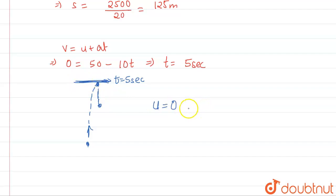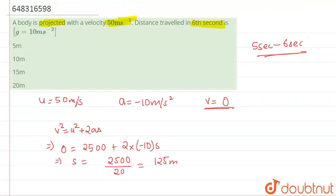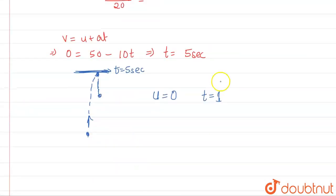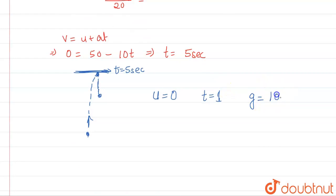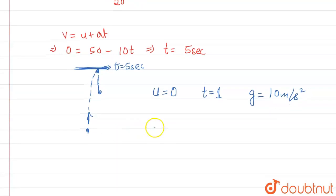V is unknown. Time is 1 second, because we are taking from 5 to 6 seconds. We take G as positive 10 meters per second squared for this downward motion. Now we solve for the distance S.